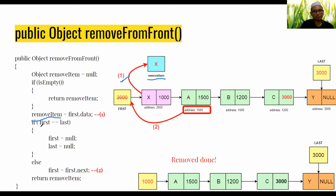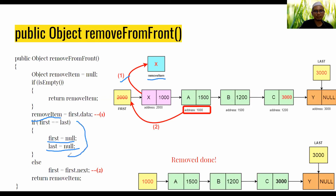Next, we check whether first equals last. If first equals last, it means there is only one node. If there is only one node, we remove it and the list becomes null — meaning no items remain in the list.